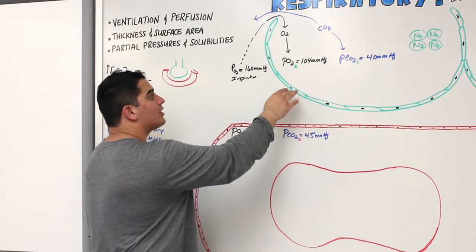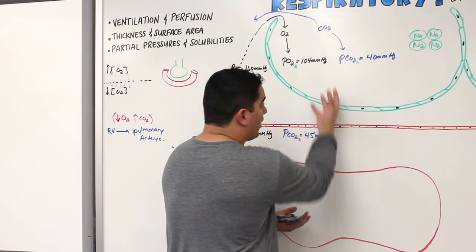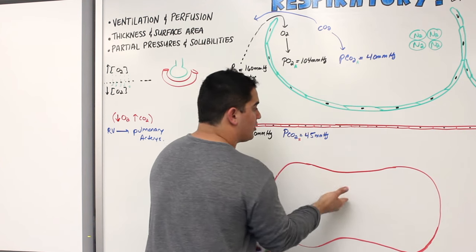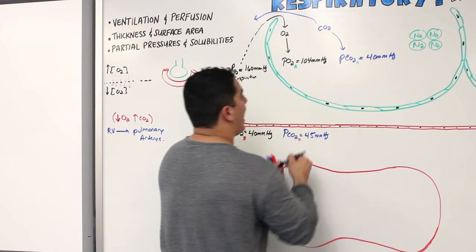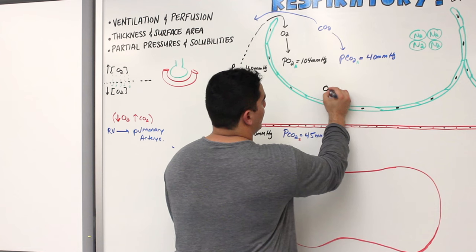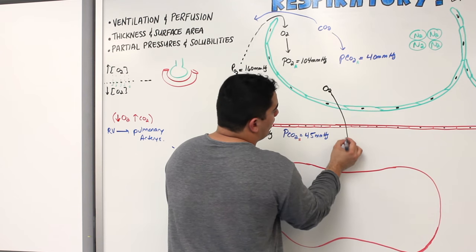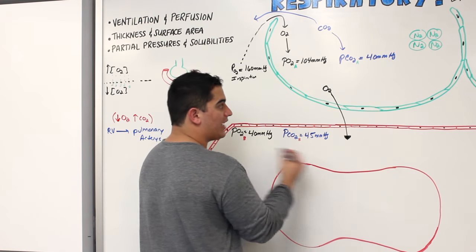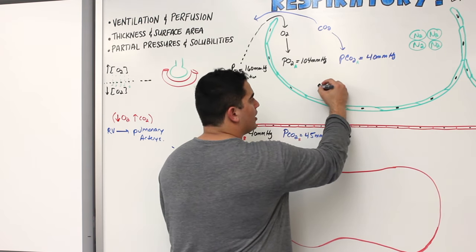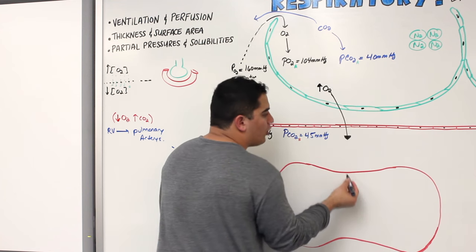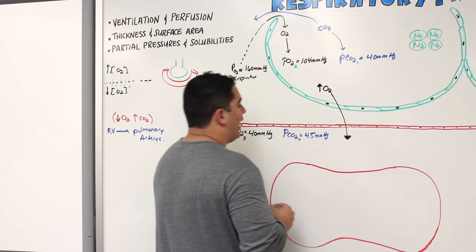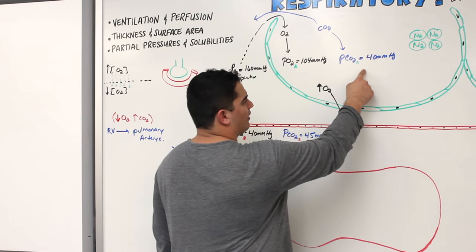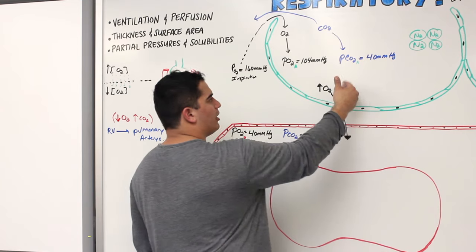Oxygen is coming from the atmosphere into the alveoli in high concentrations and will want to move from high concentration to low concentration — so oxygen will move from the alveoli into the blood. At the same time, CO2 has only a 5 mmHg gradient difference (45 to 40), compared to the nearly 60 mmHg difference for oxygen.